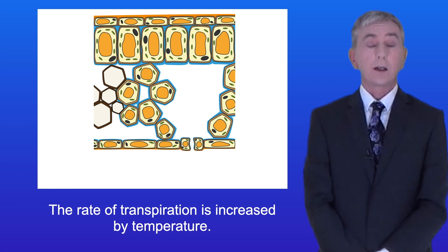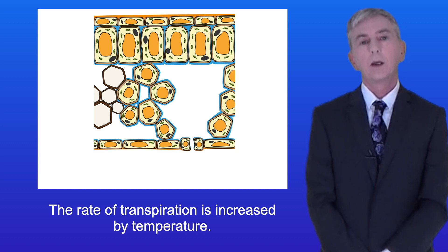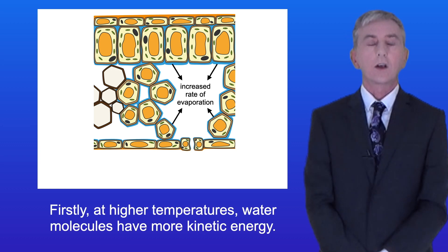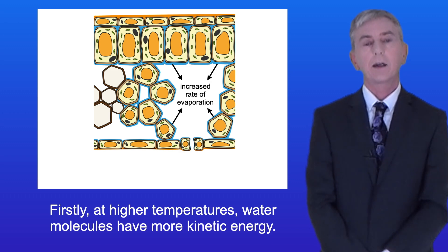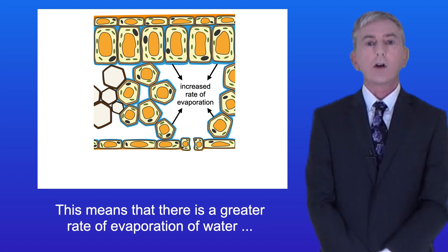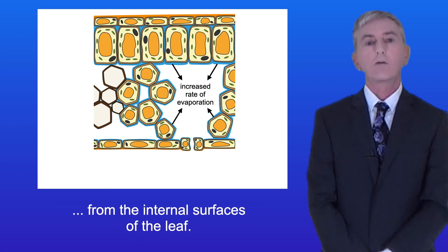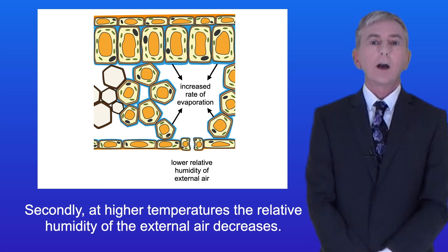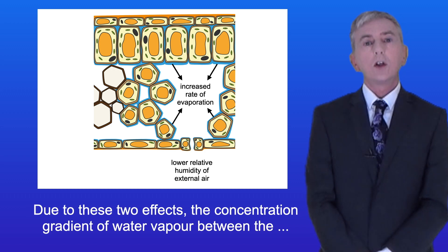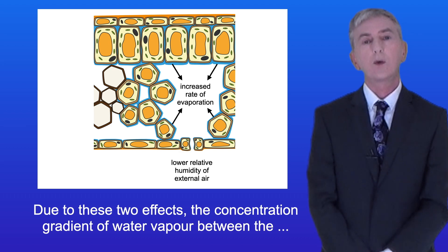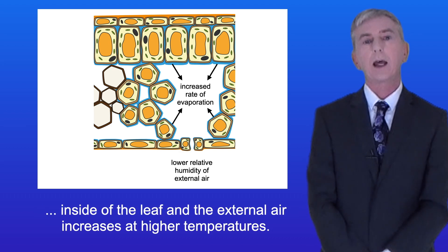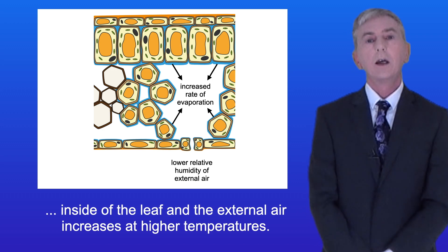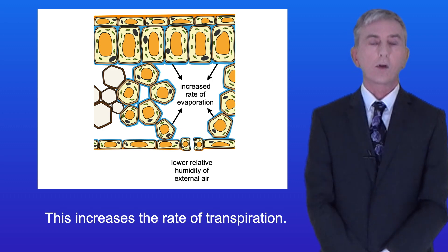The rate of transpiration is increased by temperature. At higher temperatures water molecules have more kinetic energy, which means there's a greater rate of evaporation of water from the internal surface of the leaf. Secondly, at higher temperatures the relative humidity of the external air decreases. Due to these two effects, the concentration gradient of water vapor between the inside of the leaf and the external air increases at higher temperatures, and this increases the rate of transpiration.